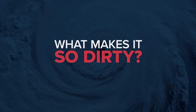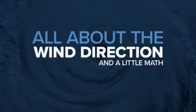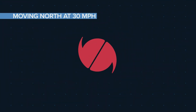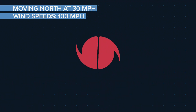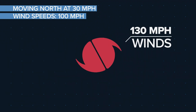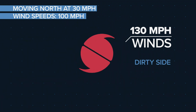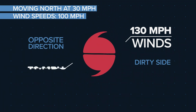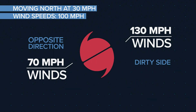So what makes it so dirty? It's all about the wind direction and a little math. For example, if a storm is moving north at 30 miles per hour and has wind speeds of 100 miles per hour, then the storm will produce winds of 130 miles per hour on the right dirty side, while on the left side, winds move in the opposite direction of the storm's movement, so they'll be slower at 70 miles per hour.